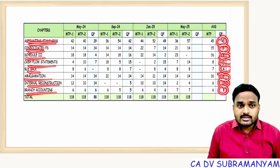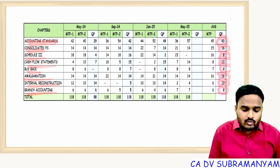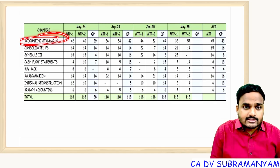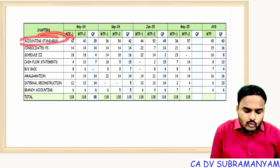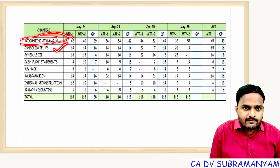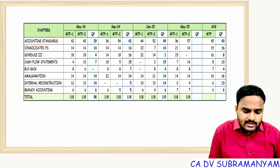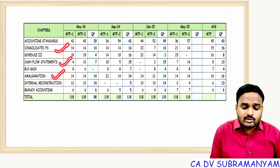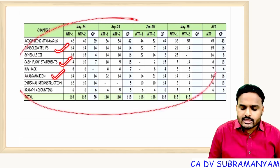It is very clear that the accounting standards figure of 43 marks excludes standards related to consolidated financial statements, standards related to amalgamation, and cash flow statements. So based on that only I prepared this table.